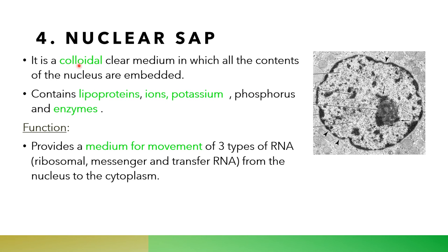The function of the nucleolus is ribosomal RNA production, which is responsible for protein synthesis. Large nucleoli are found in rapidly growing malignant cells. The nucleolar sap is a colloid clear medium in which all contents of the nucleolus are embedded, formed of lipoproteins, ions such as potassium and phosphorus, as well as enzymes. It provides a medium for movement of the three types of RNA — ribosomal, messenger, and transfer — from the nucleus to the cytoplasm.